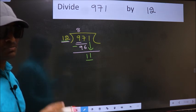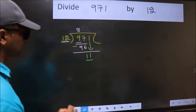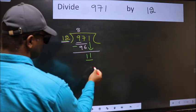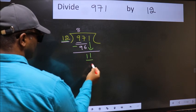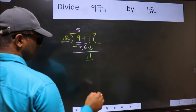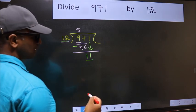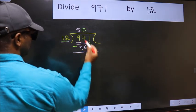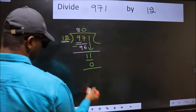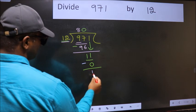Instead, what you should think of doing is, which number should we take here? If I take 1, we will get 12, but 12 is larger than 11. So what we should do is take 0. So 12 into 0 is 0. Now we should subtract. 11 minus 0 is 11.